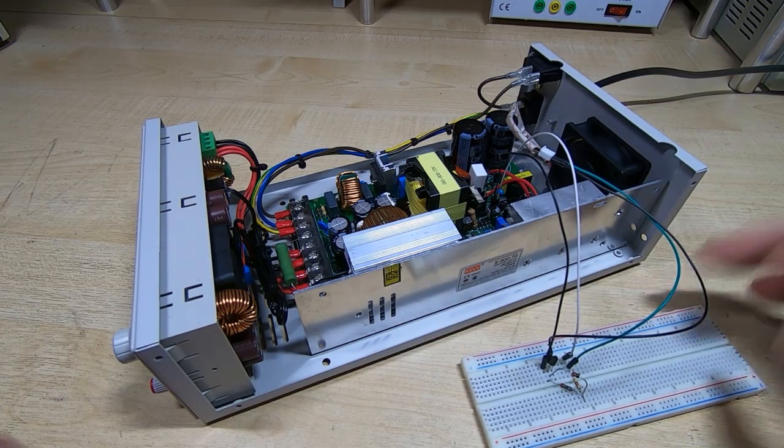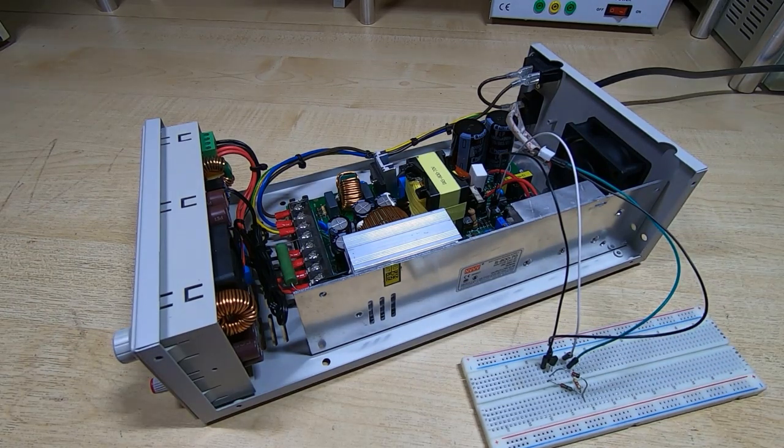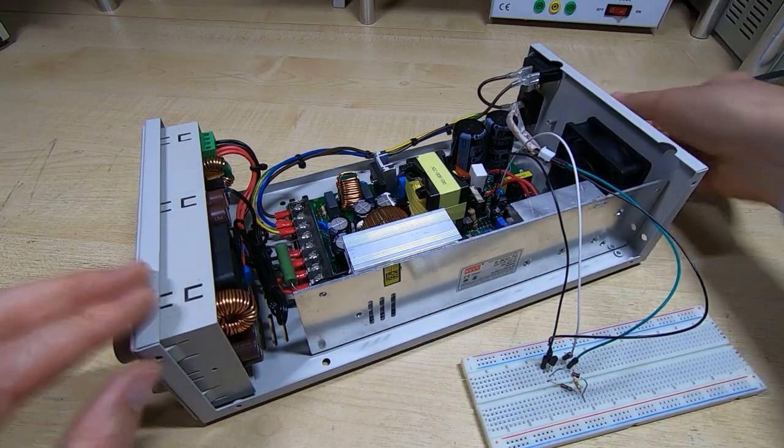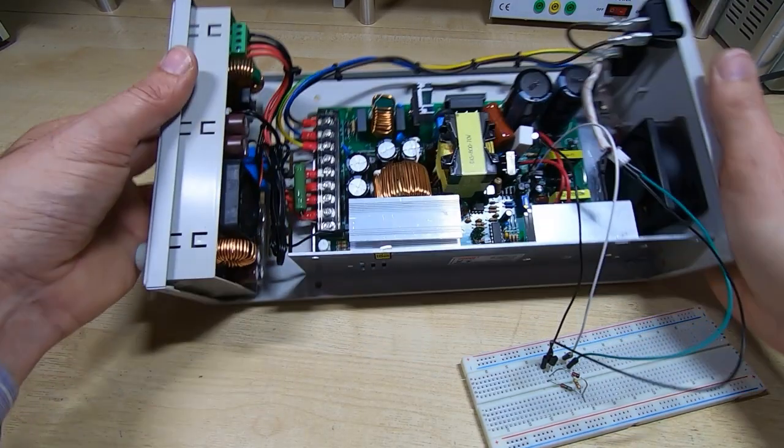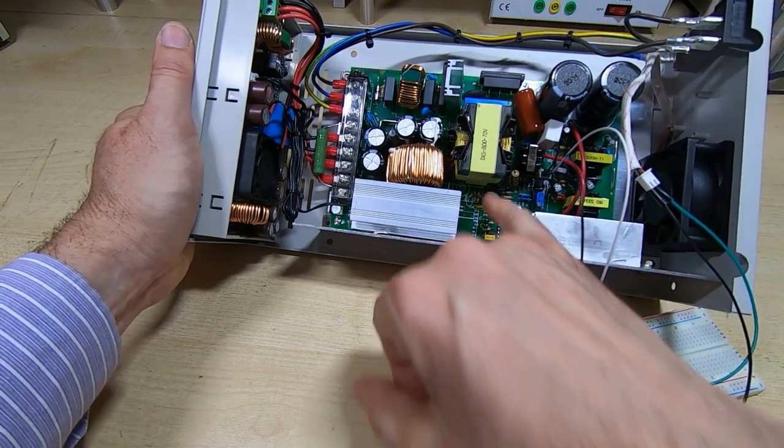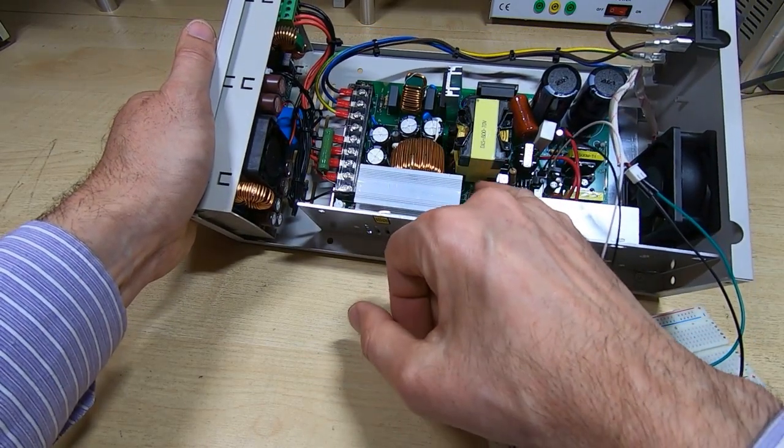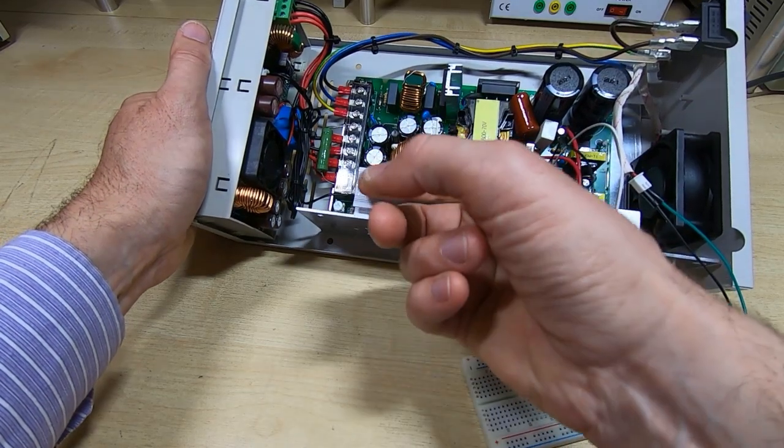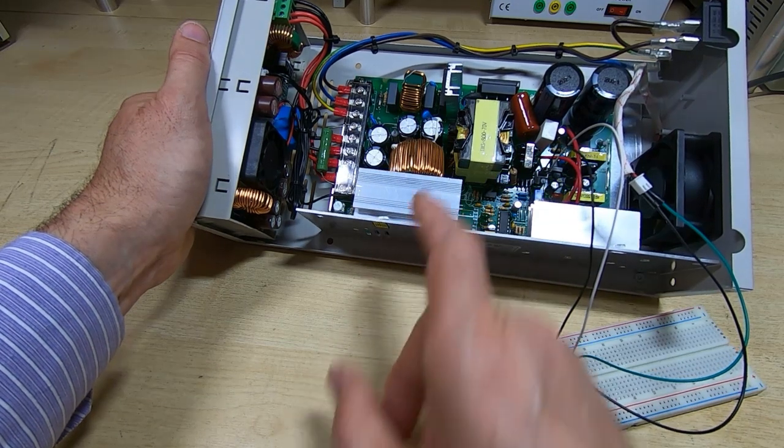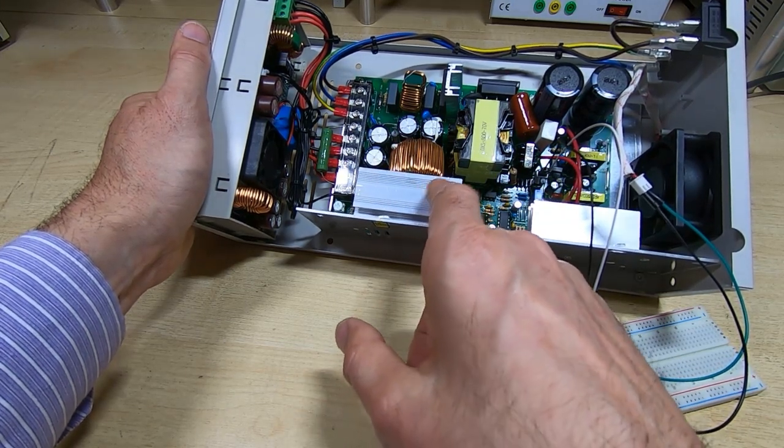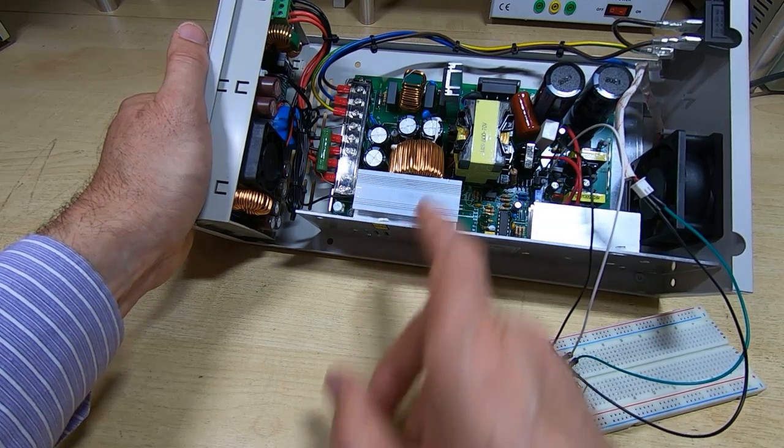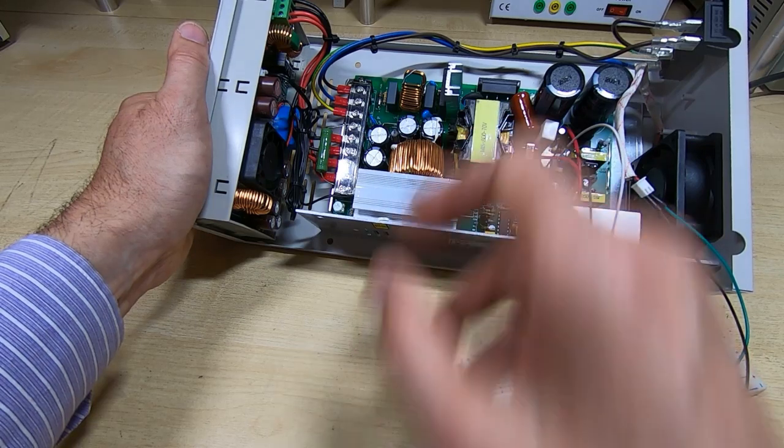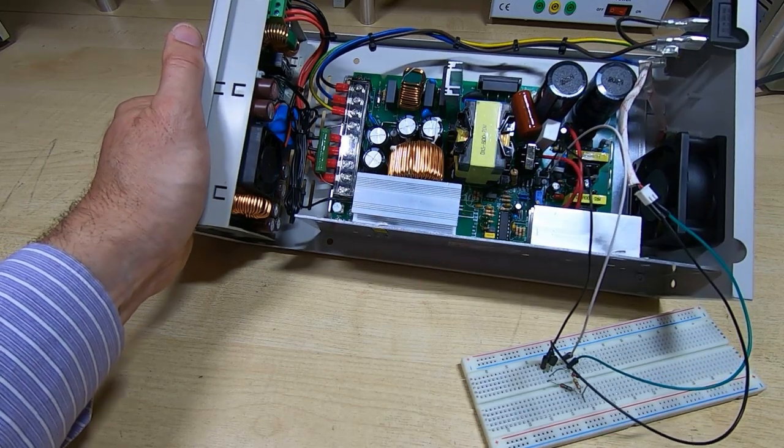And that will be pretty much it. The only other modification I will make to it is to move the thermistor that's sensing the temperature in the supply. At the moment it's just sitting here in free space and what I'm going to do is move it across and attach it to this heatsink. This is always going to be the hottest part of the system and this is what I want to use to control the fan. And as long as I do that then the rest of the supply should be protected because this is always going to be hotter than anything else in the supply. Anyway, so they're the mods I'll be making.